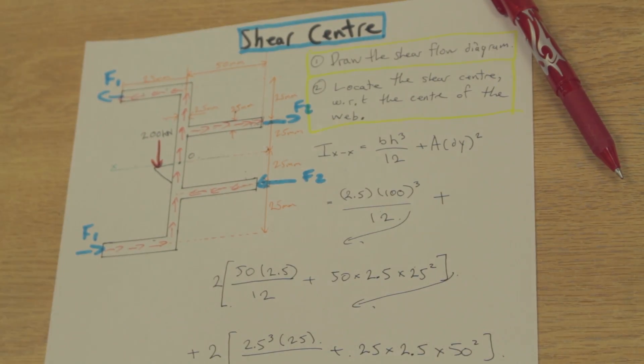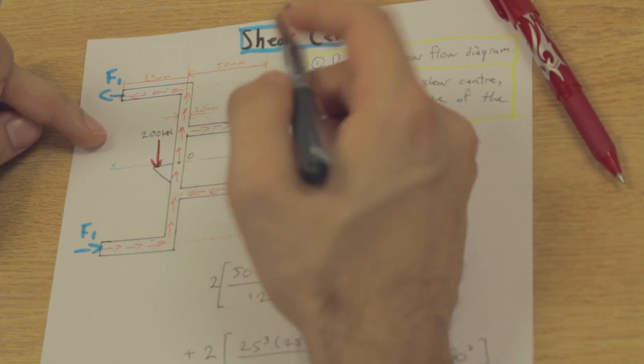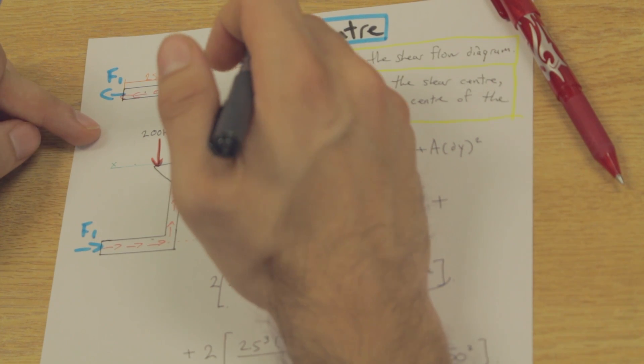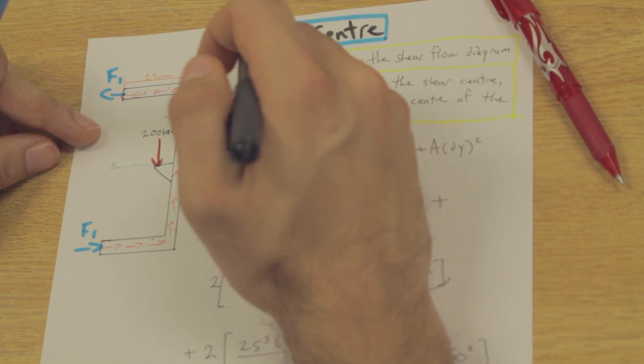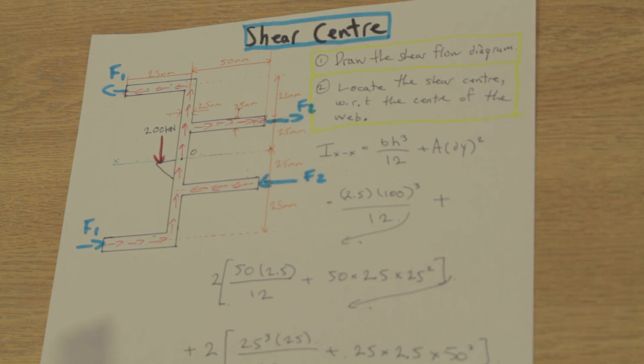So when you look at the cross section, look for two flanges or pieces sticking out that are the same distance apart from the neutral axis. And generally in shear center questions, those are going to create a couple moment.